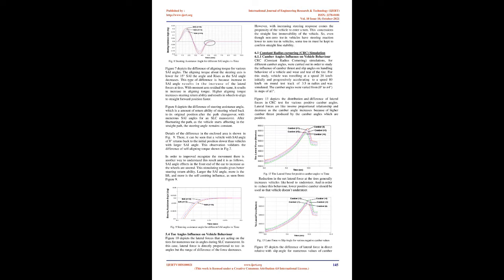Therefore, it is always desired to have positive caster angles to avoid wheels wandering. Figure 4 depicts the steering assistance angle — a measure of the returnability of the steering wheel back to its original position after a lane change — for numerous caster angles. After changing the path, as the vehicle starts moving in the straight lane, the steering angle residue is constant.